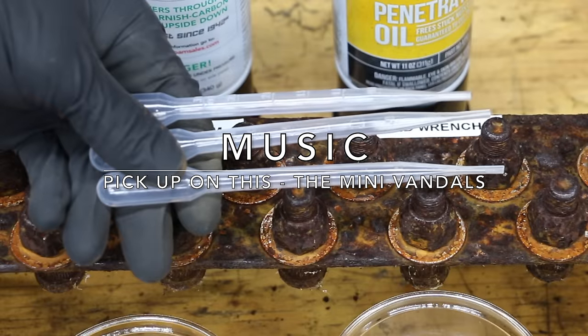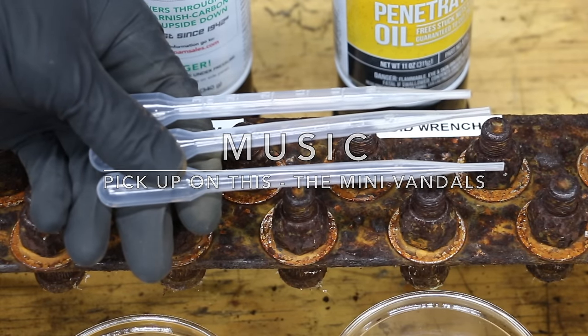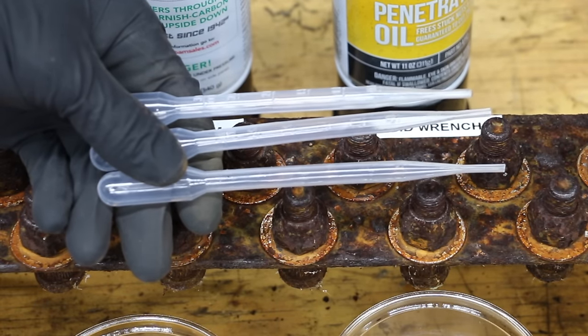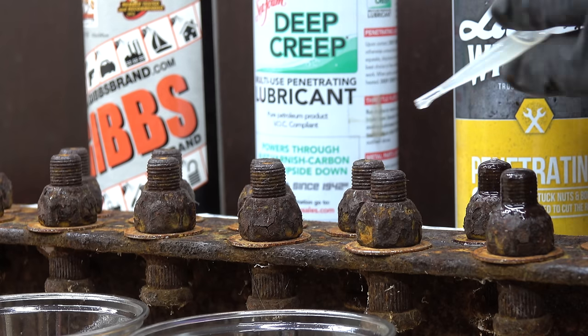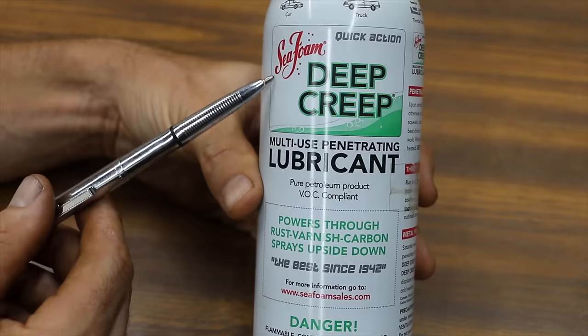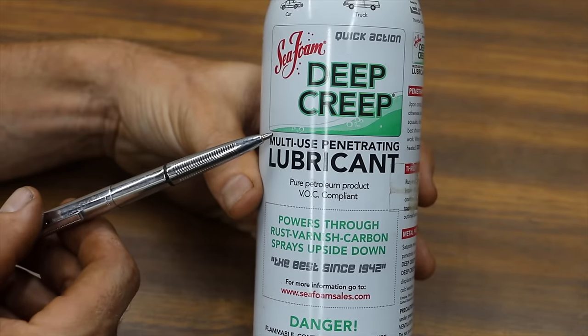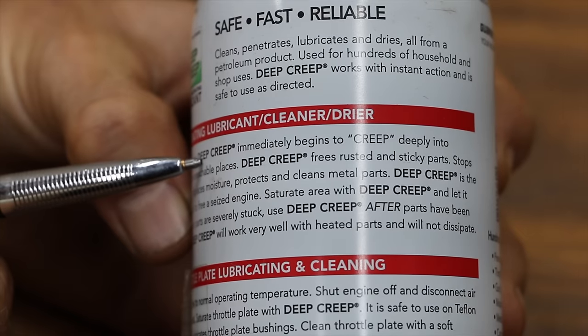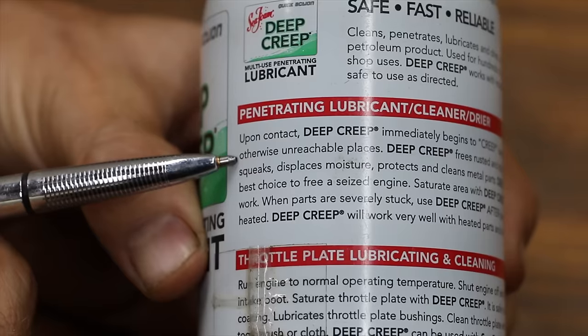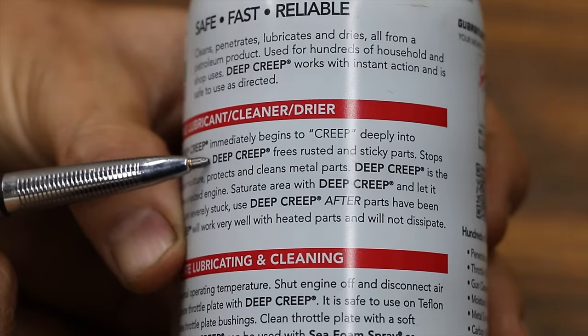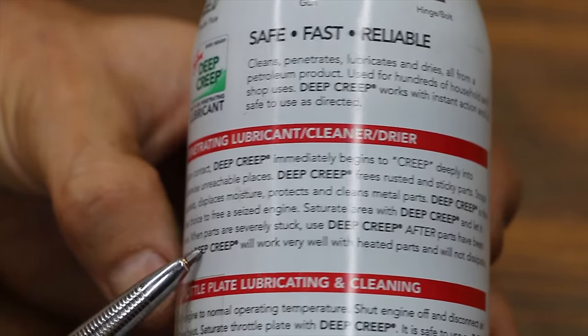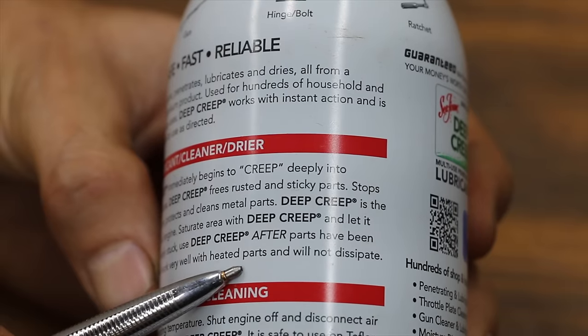I'll apply 10 drops of each penetrating oil on each one of these nuts, and we'll give it one hour before we come back and test them. Seafoam Deep Creep is a multi-use penetrating lubricant. Deep Creep immediately begins to creep into otherwise unreachable places. Deep Creep frees rusted and sticky parts. Deep Creep will work very well with heated parts and will not dissipate.